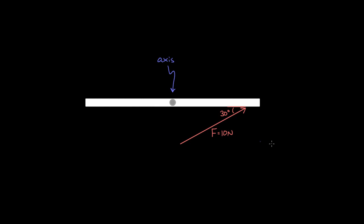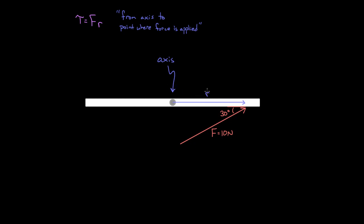Now that we've identified the axis, we can figure out how much torque we're exerting. Torque is F times D, or F times R. What's important to know is that R represents the vector that points from the axis to the point where the force was applied. Note that R is not the entire radius necessarily — it's always from the axis to the point where the force is applied. Technically R is a vector; it points away from the axis to the point where the force is applied, not toward the axis.